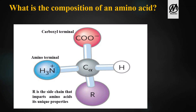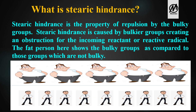What is the composition of an amino acid? An amino acid is basically formed when a carboxyl terminal and an amino terminal are attached to a carbon atom along with a hydrogen atom and an R group, which is the bulky group that gives different characters to the amino acid. The amino terminal is the positive side and the carboxyl terminal is the negative side of the amino acid.